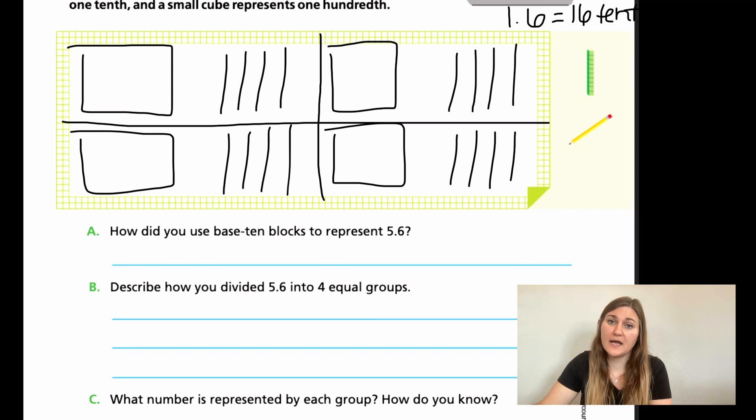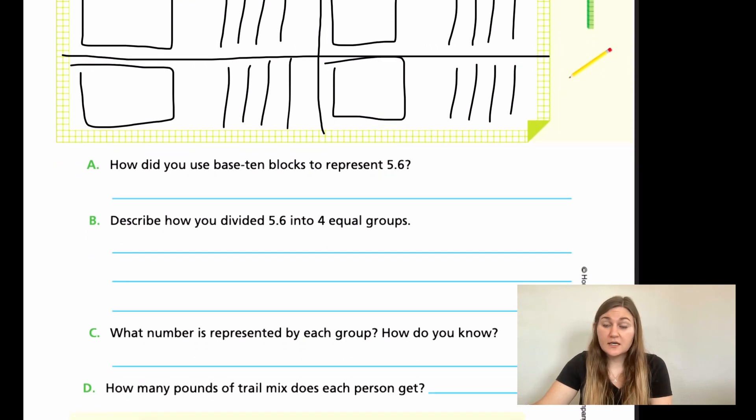So now here's where you're going to go ahead and try to do this on your own and explain what we just did together. So for A, how did you use base 10 blocks to represent 5.6? So in words, try to explain what we just did. B, describe how you divided 5.6 into four equal groups. So how did you get 5.6 into those four equal groups? Just explain what we did. C, what number is represented by each group? So we put numbers into four groups, but what is that number in standard form? We have it in visual form, but what is it in standard form? Can you put those images back into numbers? And then for D, how many pounds of trail mix does each person get? So when you find out that number per group, that is going to be your total for D as well. Go ahead and try to explain these four problems as best you can. We'll come back and we will solve it together. Go ahead and hit pause here.